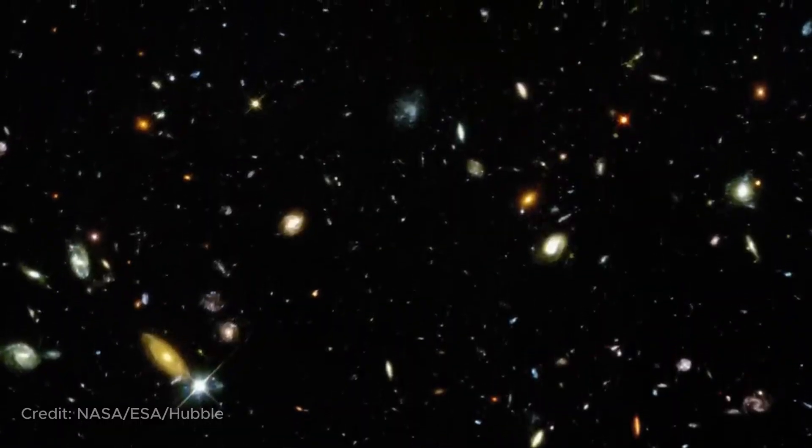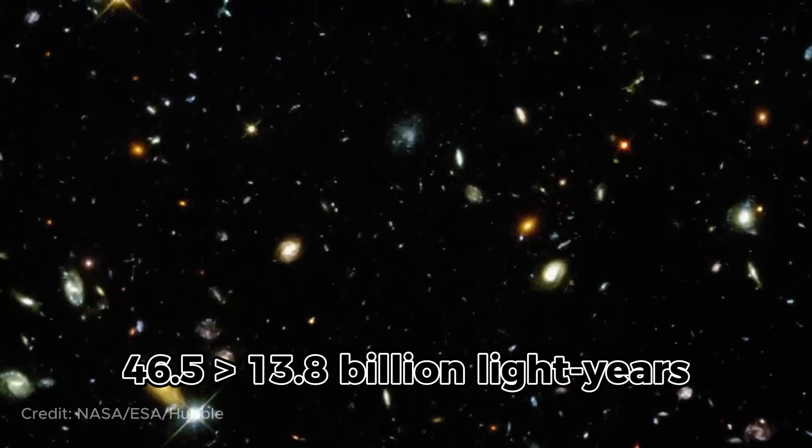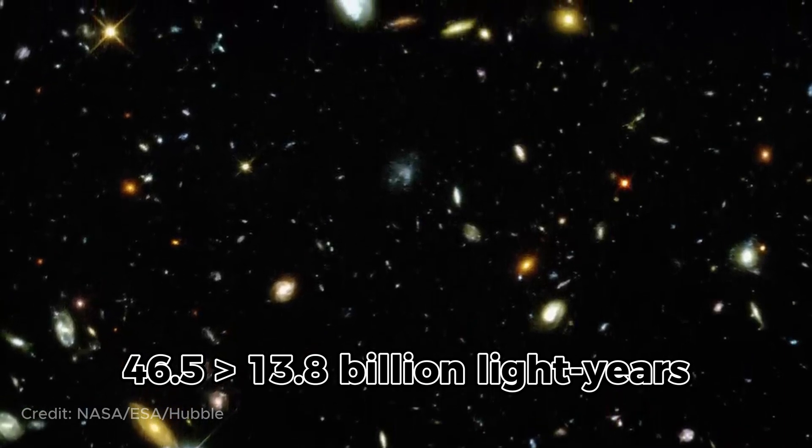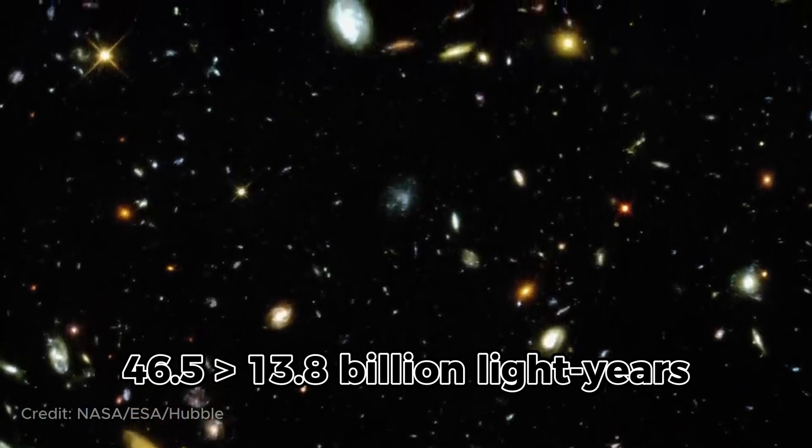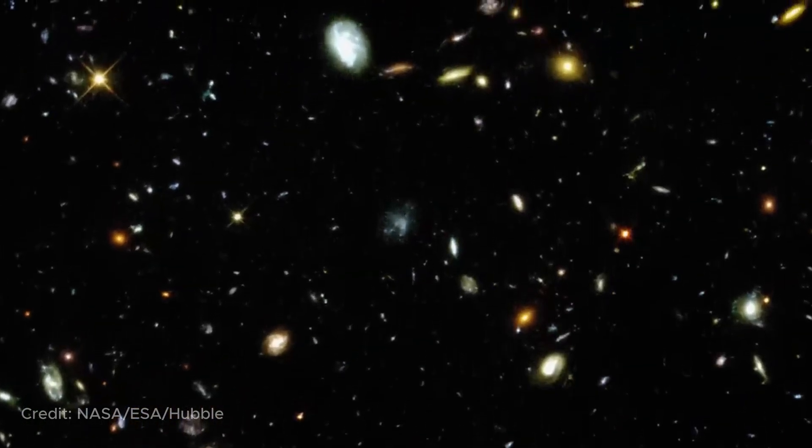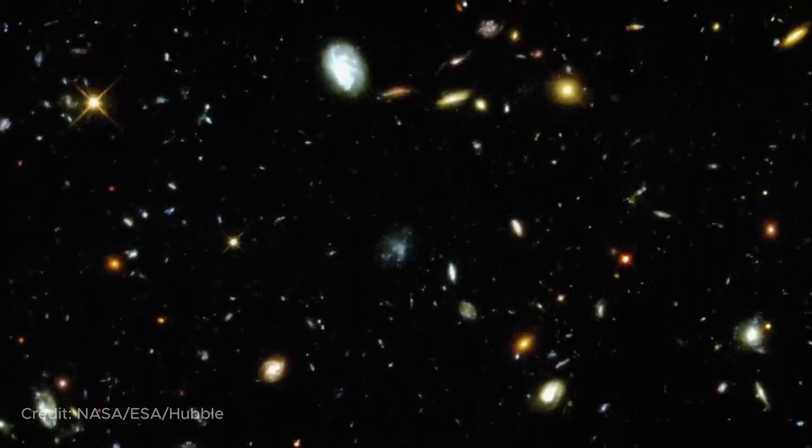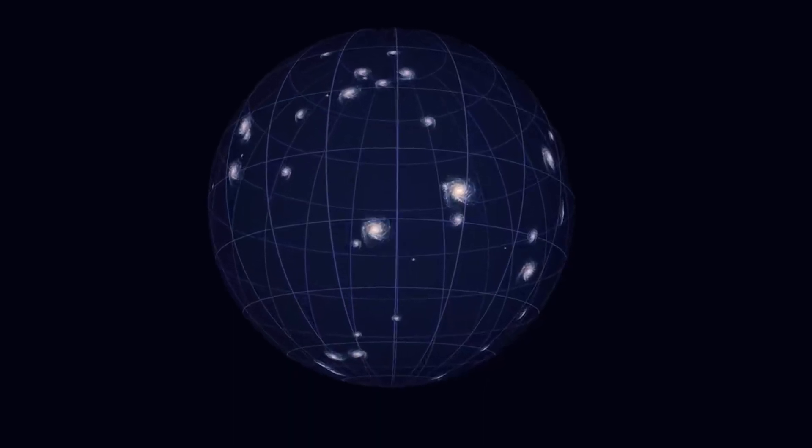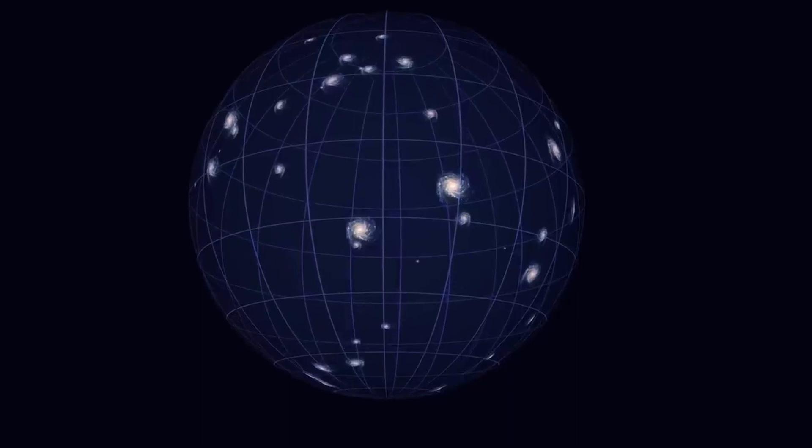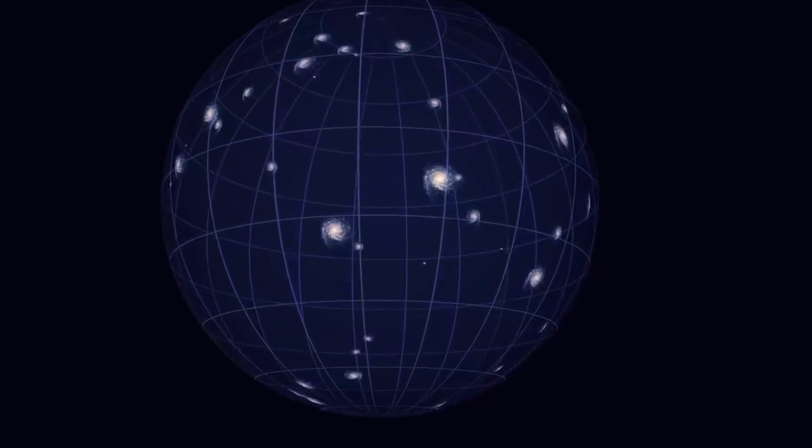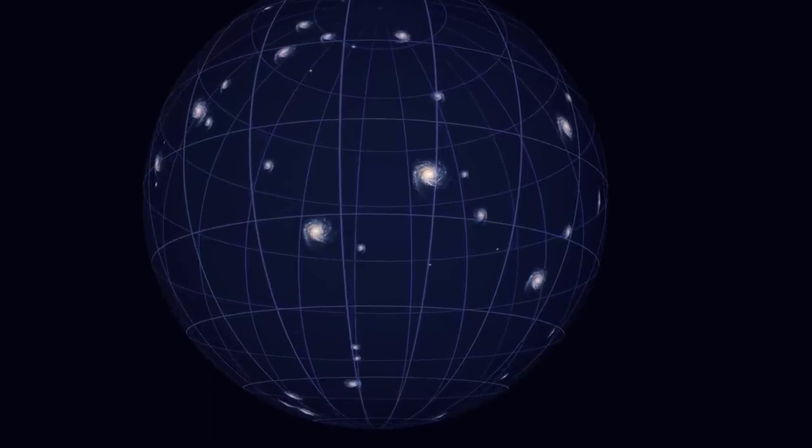A careful listener might ask, why is the radius of the observable universe larger than the age of the universe multiplied by the speed of light? It's all because our universe is expanding. Here's a very vivid example with a bug running on a stretching rubber band. It will take him more time to reach the other end of the rubber band than if he were running on a static rubber band.